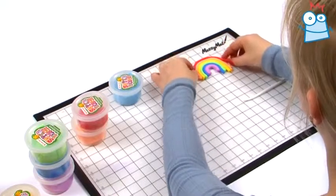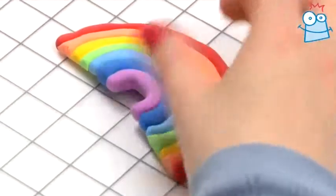Repeat this with a yellow strip, an orange strip, and a red strip, curling them around the rainbow each time. You should end up with something like this.